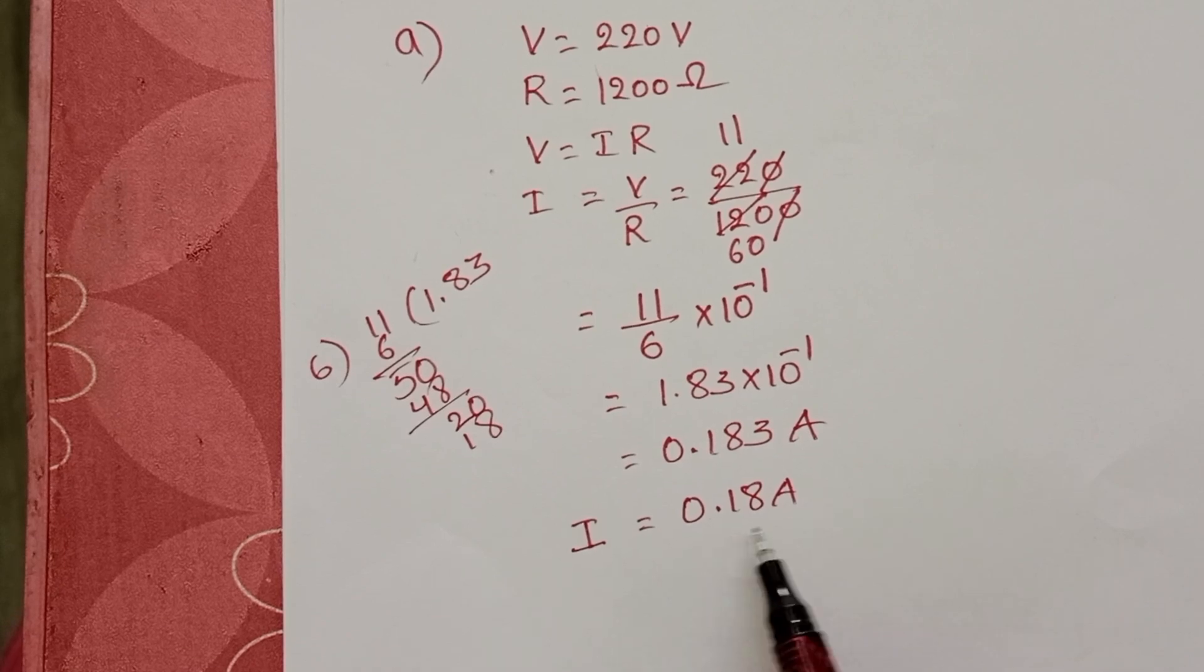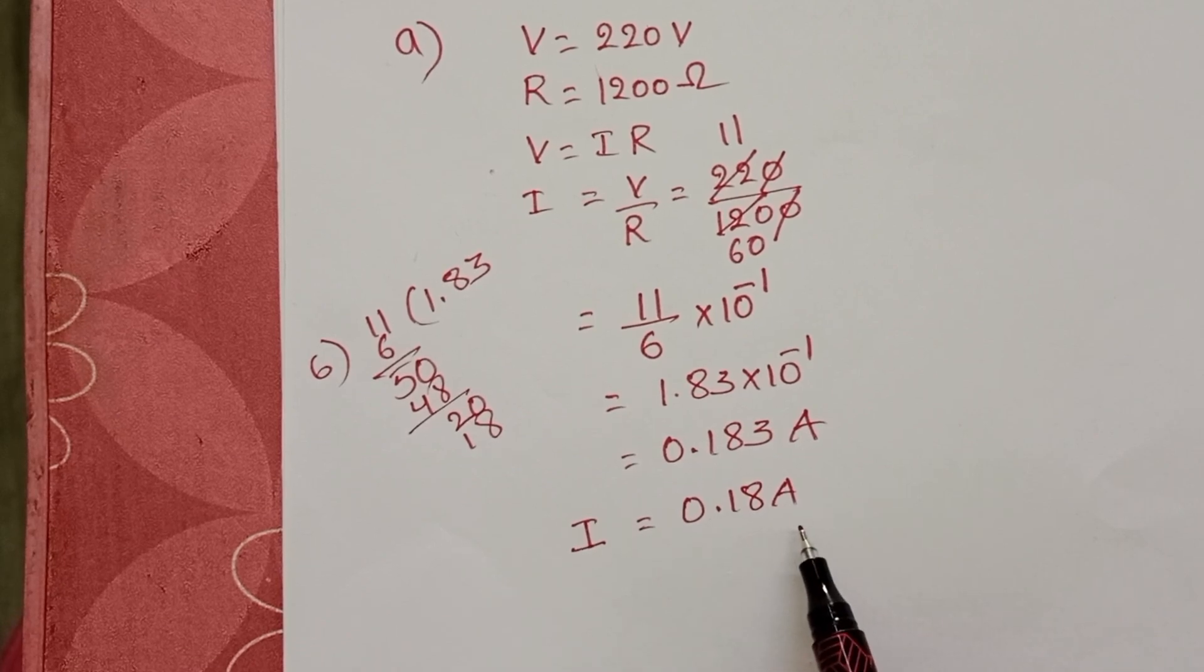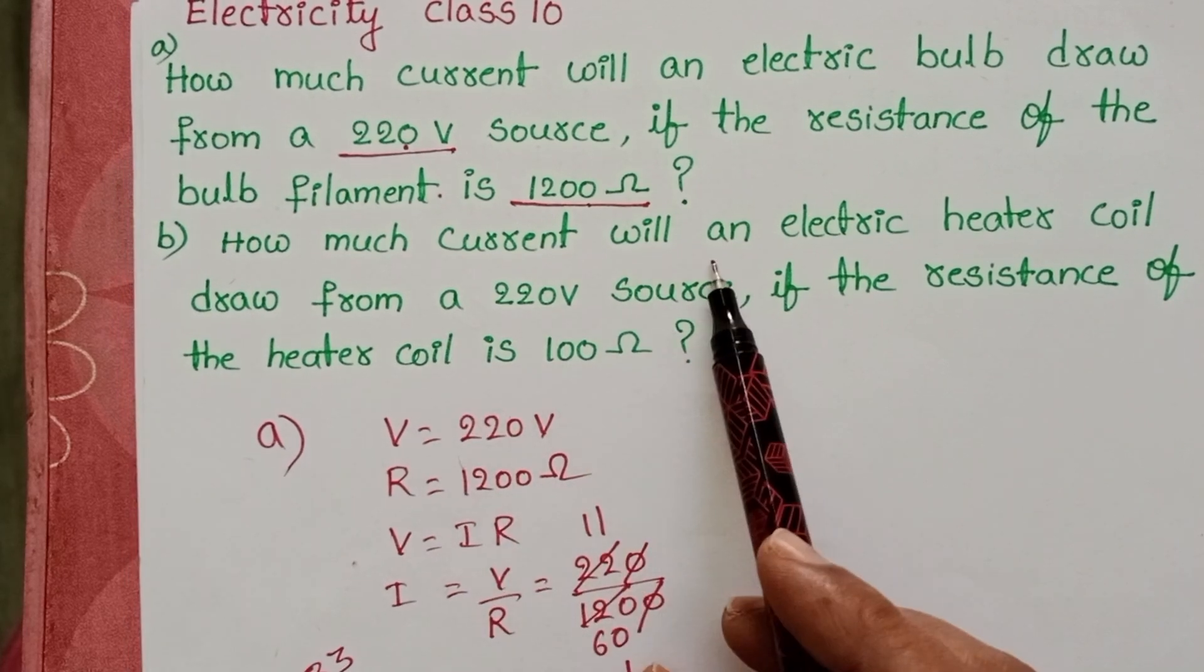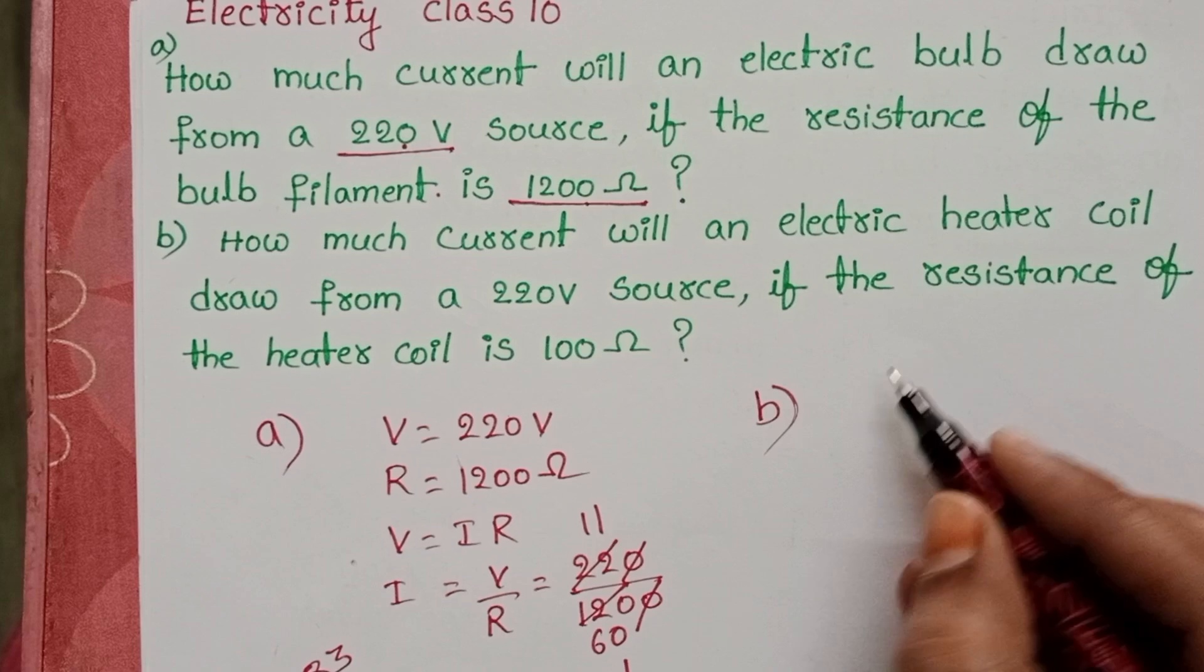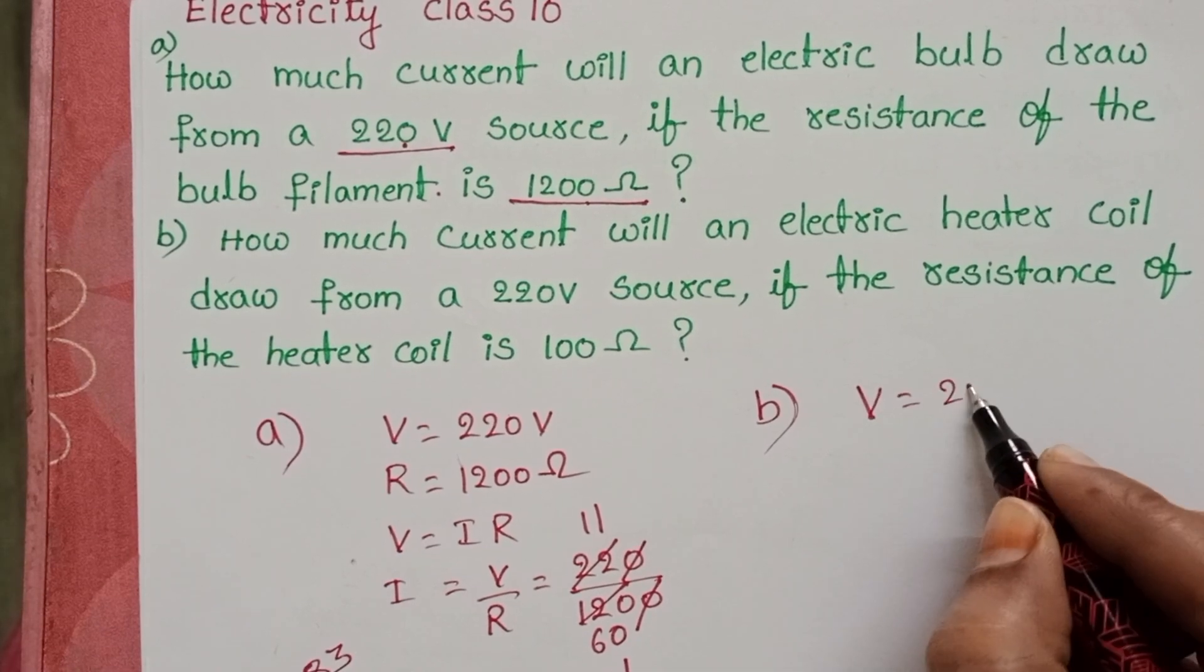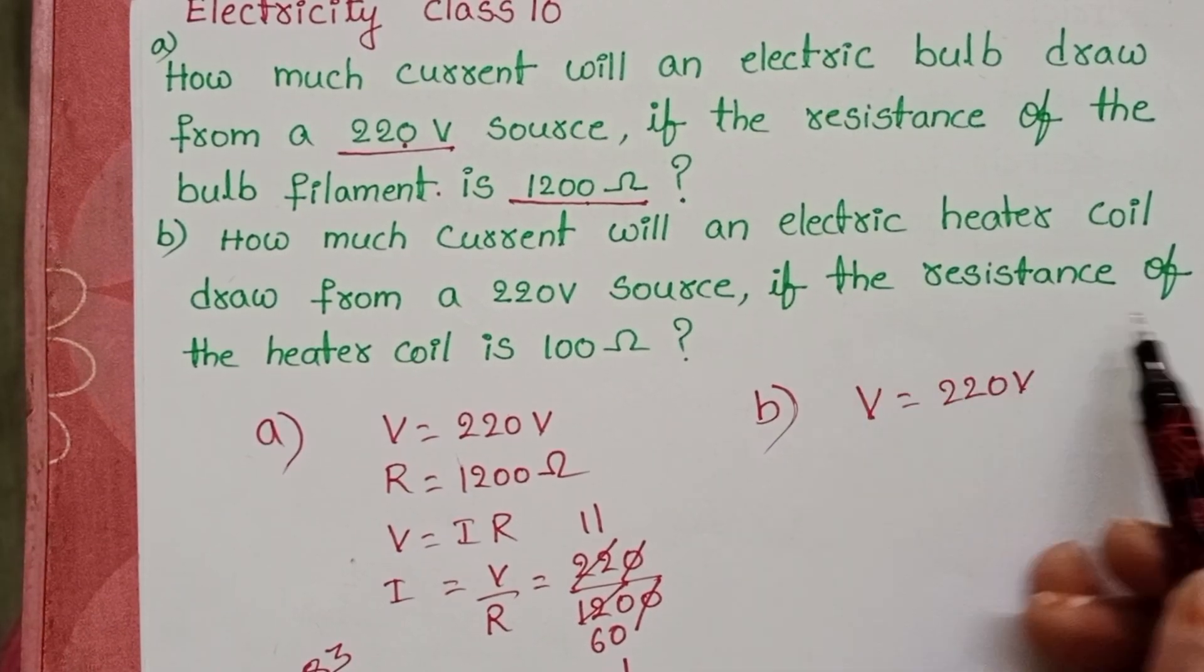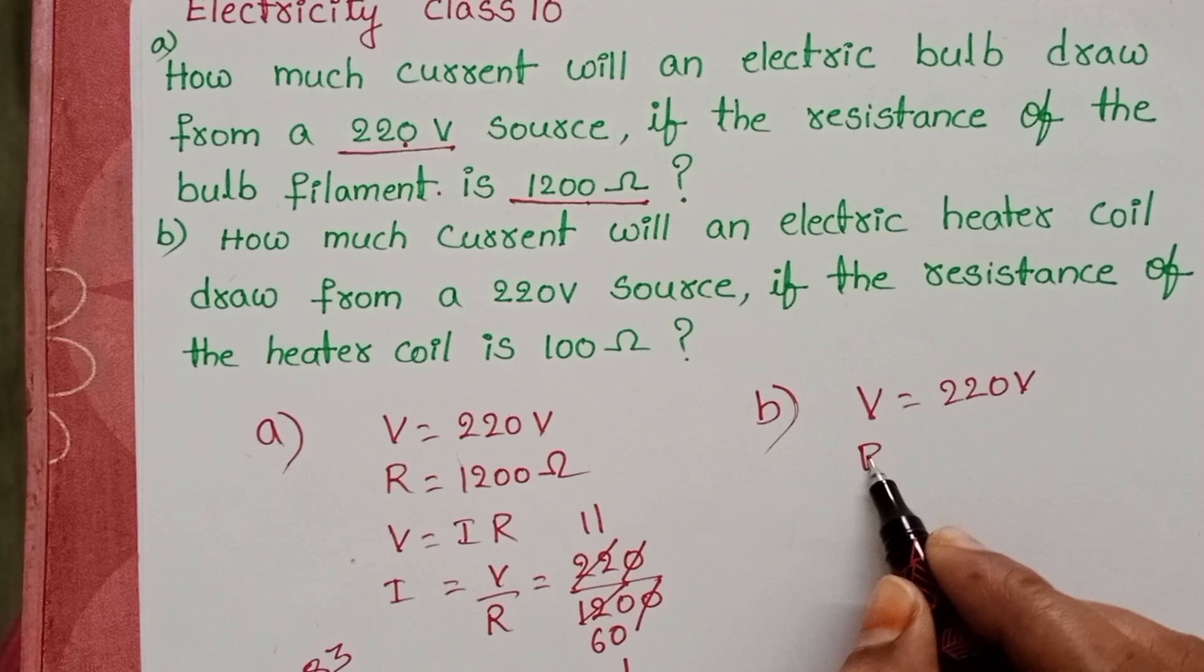The current passing through the electric bulb is 0.18 amperes. In the second question: How much current will an electric heater coil draw from a 220 volt source? Given: potential difference is 220 volts and resistance of the heater coil is 100 ohms.